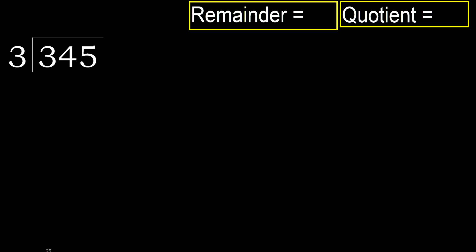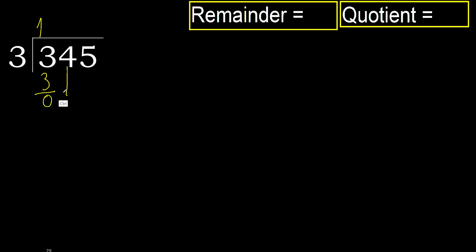345 divided by 3. 3 is not less. 3 multiplied by which number is nearest but not greater? 3 multiplied by 2 is 6, which is greater. 3 multiplied by 1 is 3, which is not greater. 3 minus 3 equals 0. Next, eliminate 0 on this side.